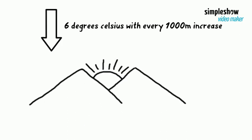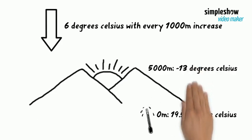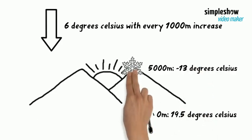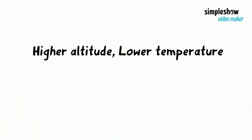At 0 meters altitude, the temperature may be 19.5 degrees Celsius, but at the top of a mountain at 5000 meters, temperatures can drop to minus 13 degrees Celsius. Why do higher altitudes have lower temperatures? There are three reasons.